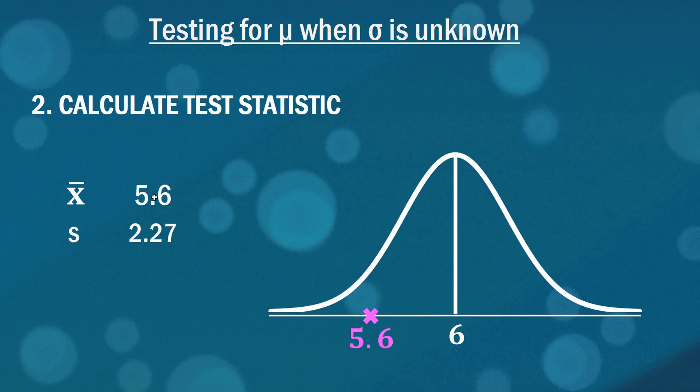So here's our sample mean at 5.6 and our sample standard deviation at 2.27. If you were to draw a distribution of the possible values of our sample mean given the population mean is 6, in other words assuming the null hypothesis is true, this would be the distribution. This hypothesis test is really going to be asking how extreme is this value of 5.6 if the null hypothesis was true? Is it too extreme for us to realistically hold on to that null hypothesis?